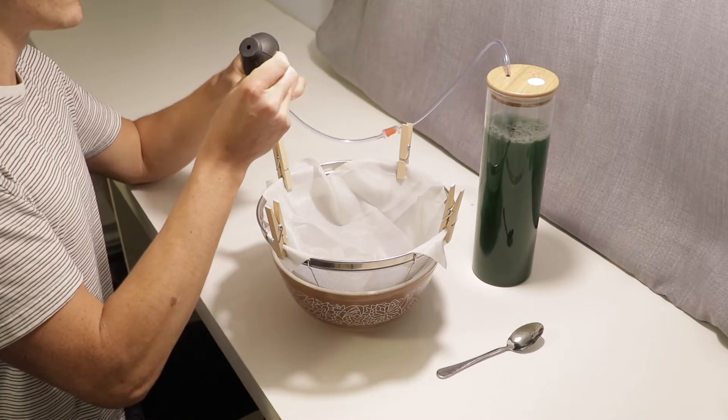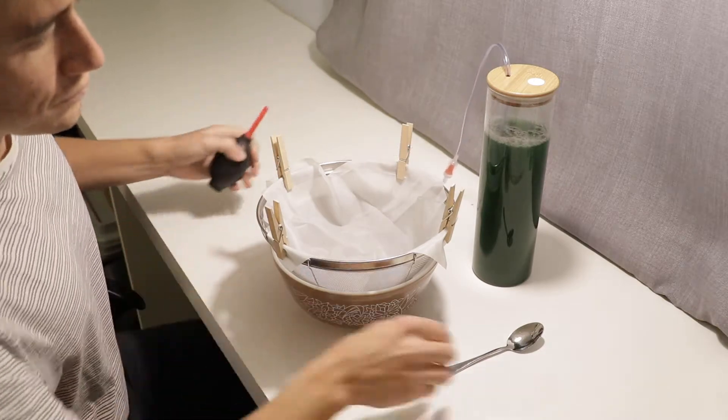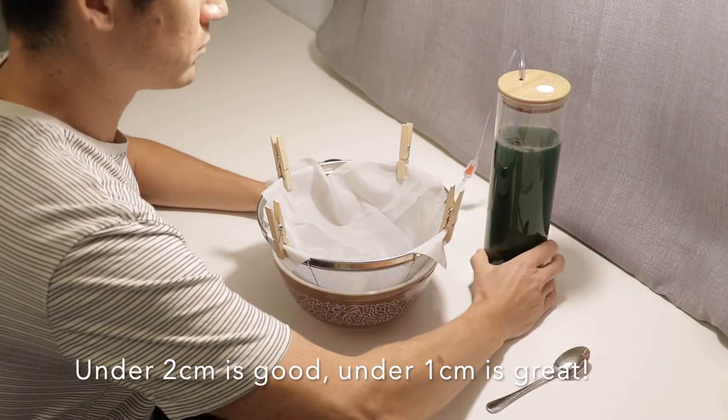Mix up your tank really well and use a secchi stick to measure optical density. This particular batch came in at 1.9 centimeters and I got a pretty good yield from it.